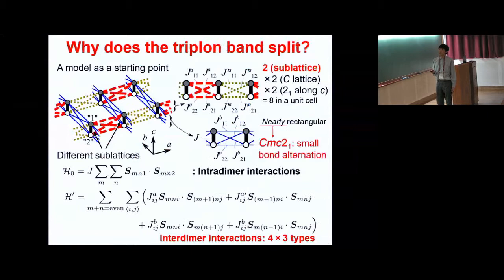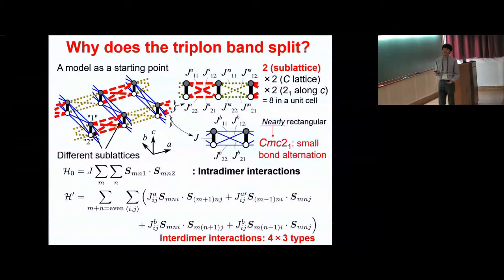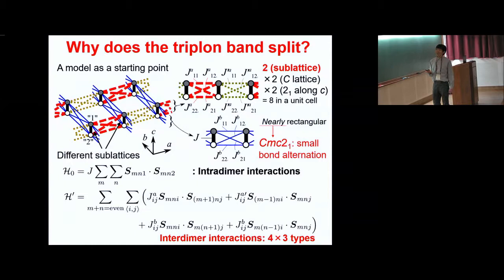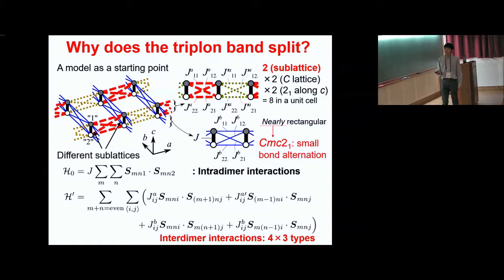I now explain why this triplon band splits. I present this model as a starting point: there are eight dimers in a unit cell — two from two sublattices inside a plane, two from translation symmetry, and two from the two layers inside a unit cell. I will discuss the first two degrees of freedom, since the four bands induced by those symmetries are always degenerate. These dimers form a nearly rectangular lattice. Under the space group CMC21, a small bond alternation is allowed, and different sublattices are induced inside the plane.